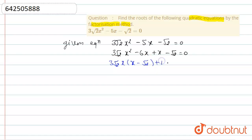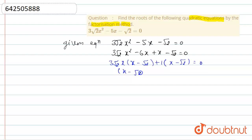If we take common 1 from these two terms, then we will get x minus √2 equal to 0. If we take the common factor x minus √2, then we will get 3√2·x plus 1 equal to 0.